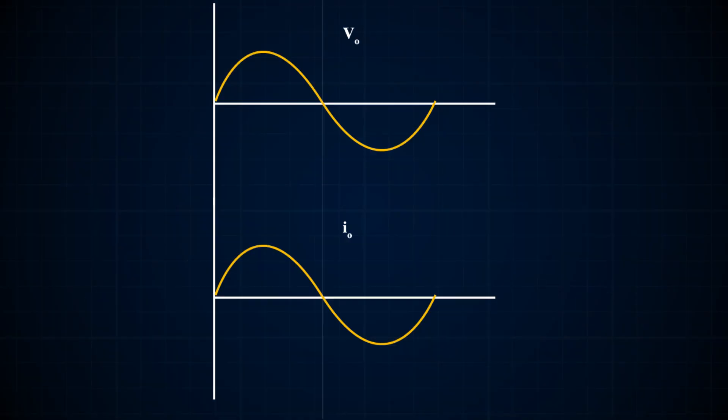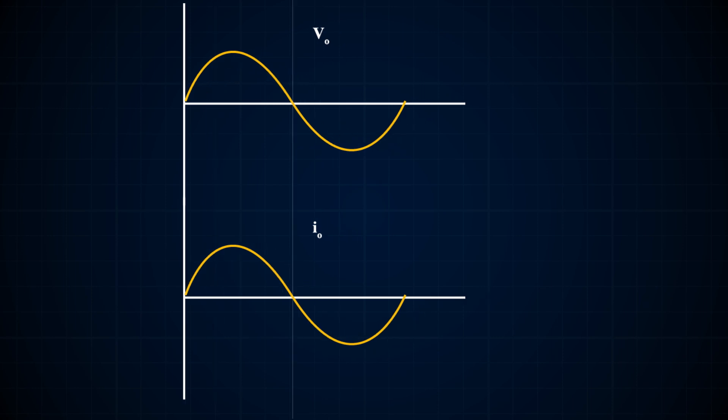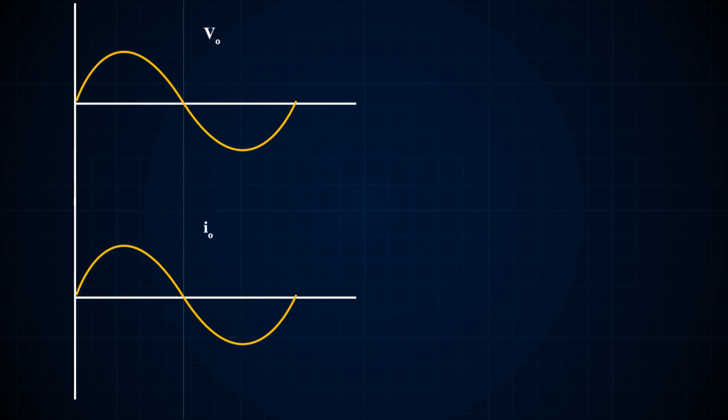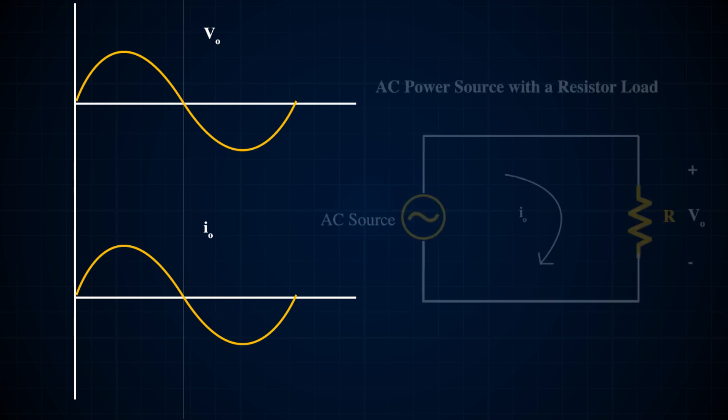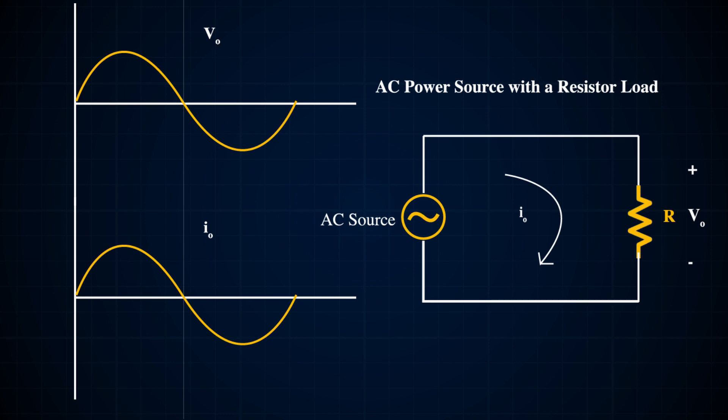First, let's talk about true power. Assume we have an AC power supply connected in series with a linear time-invariant load, such as a resistor. Take a look at this waveform of the power supply in this circuit, showing both current and voltage from the source. We can observe here that both are in phase. Power is dissipated when it gets to the resistive load, but the polarity and phase of both the current and voltage remain the same.